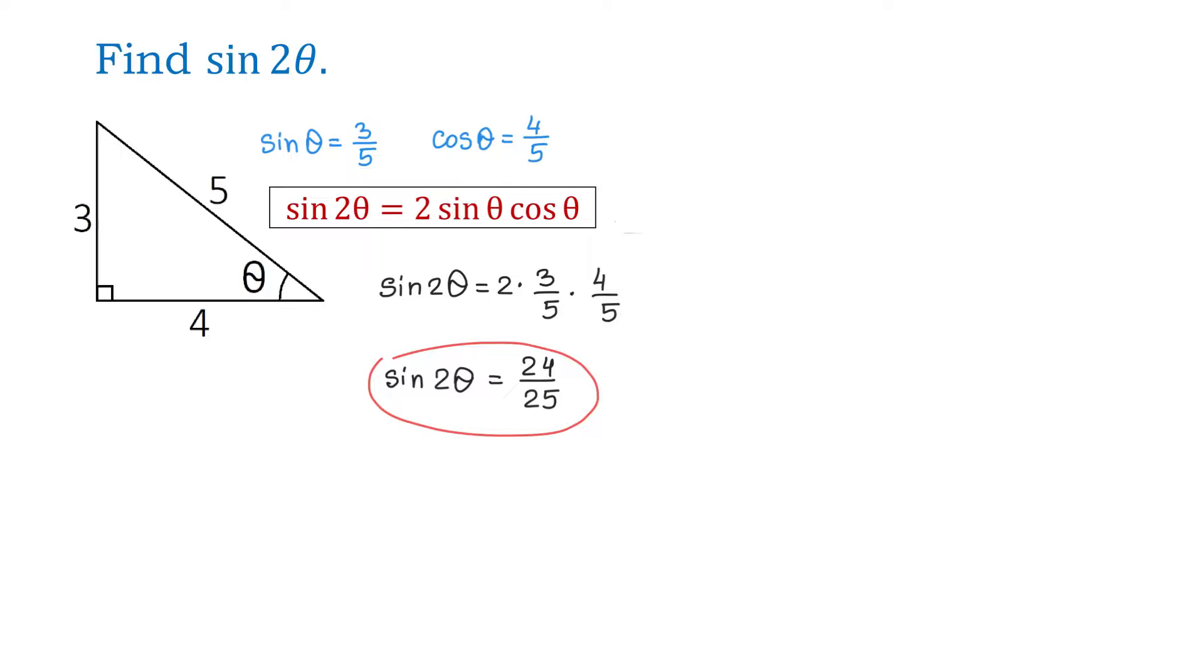Now, let's look at another way of getting the value of sine of 2 theta. We know that sine of theta is 3 over 5. From here, we can write that theta equals inverse sine of 3 over 5.